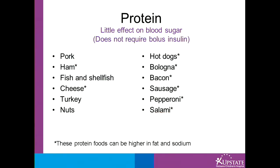Other examples of protein foods are pork, ham, fish, shellfish including shrimp and scallops, cheese, turkey, nuts, hot dogs, bologna, bacon, sausage, pepperoni, and salami. Note that some protein foods are high in fat and sodium and are recommended to be eaten less often for a healthy diet.